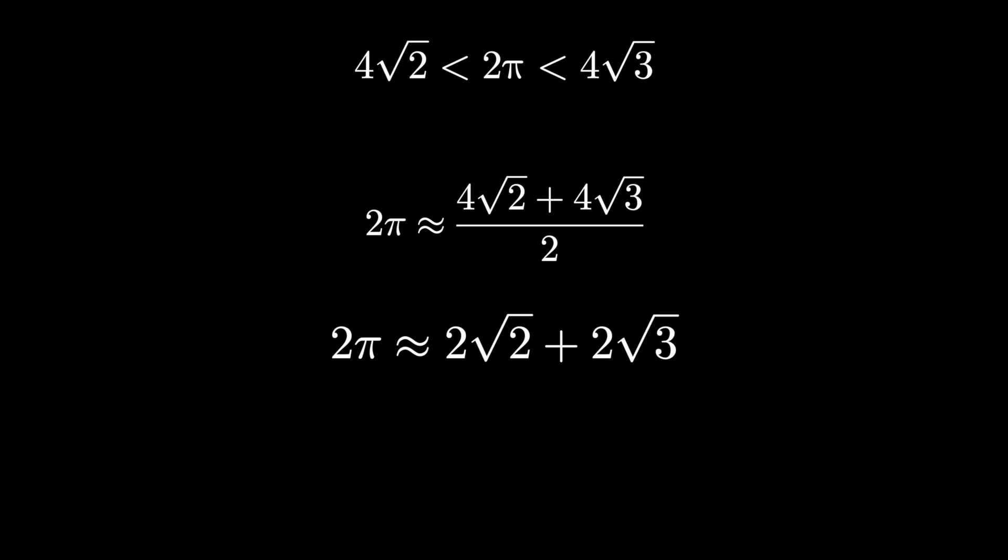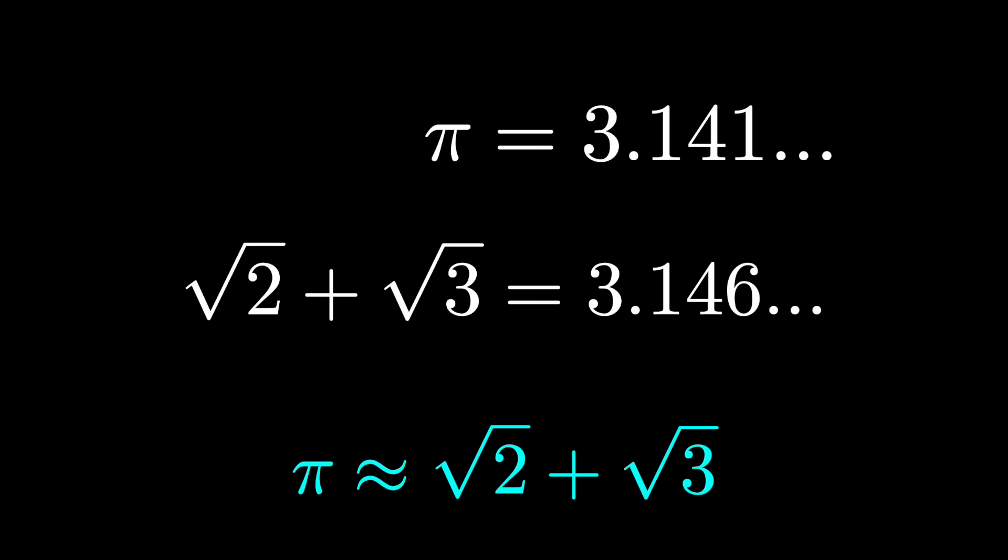Dividing both sides gives us that pi is approximately root 2 plus root 3. And this is actually a very good approximation.